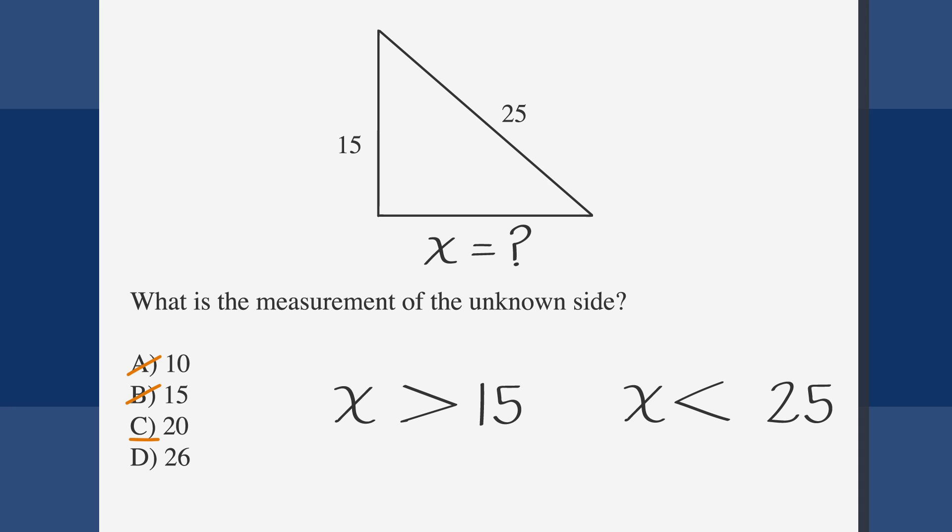Finally, answer choice D, 26, is just above our limit. Cross it out. By carefully guesstimating, we were able to get rid of all the answer choices except C, and we can safely choose it as the correct answer.